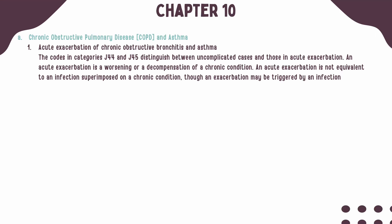Let's first cover the guidelines for COPD and asthma. Codes in J44 and J45 will distinguish between uncomplicated cases and cases that have acute exacerbation. When you see the term acute exacerbation, it just means that there is a worsening or decompensation of a chronic condition — in this case, your asthma or your COPD.